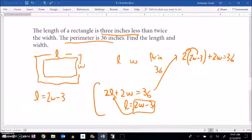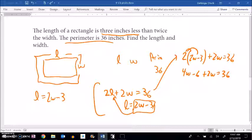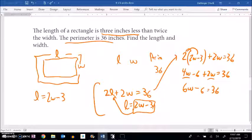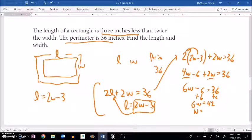So let me distribute that into there. 4W - 6 + 2W = 36. Combine up some like terms. 6W - 6 = 36. So it's turning out very nice. Add six to both sides. 6W = 42. So 42 divided by 6 gives me 7. W = 7.